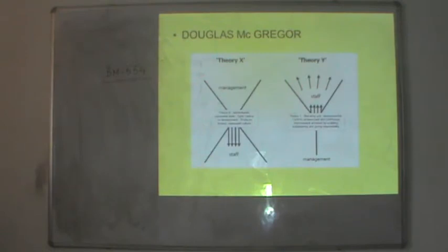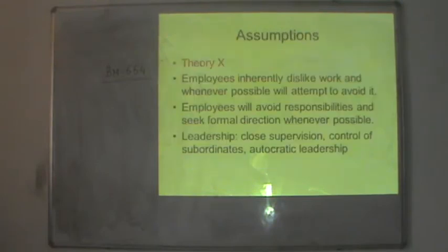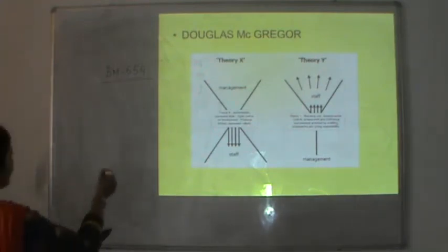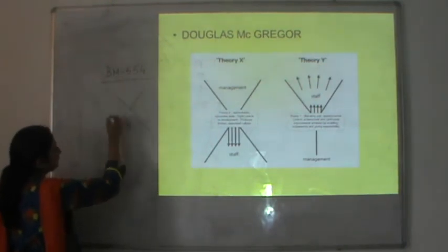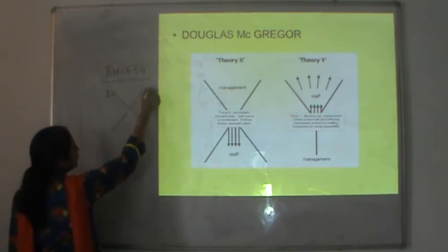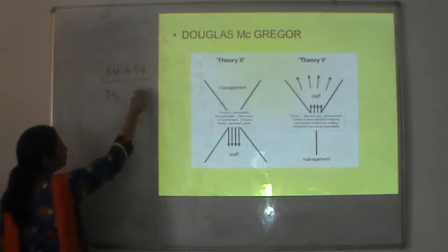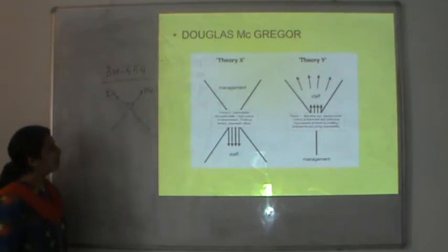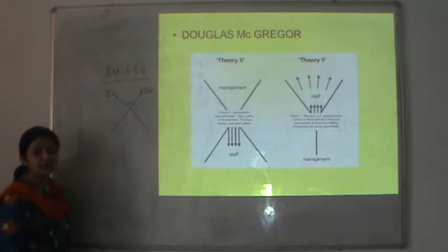When we talk about Theory X, we look at its shape: individual goals and organizational goals are shown in two separate directions with no alignment between them — individual goals are separate from organizational goals — and that is how it derives the X shape.